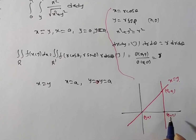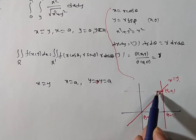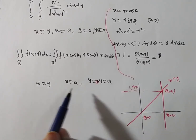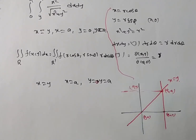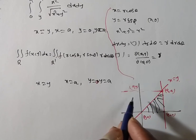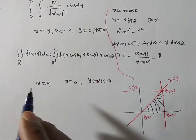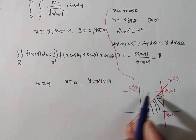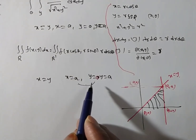Observe that the point (0, a) is not mentioned anywhere in the limits — x = 0 is never specified. So we will not take that region. Our region is only the triangle bounded by x = y, x = a, and y = 0, with vertices at (0,0), (a,0), and (a,a). The point (0, a) cannot be included.